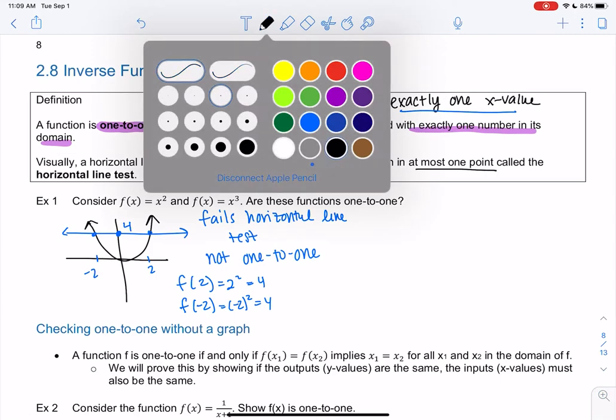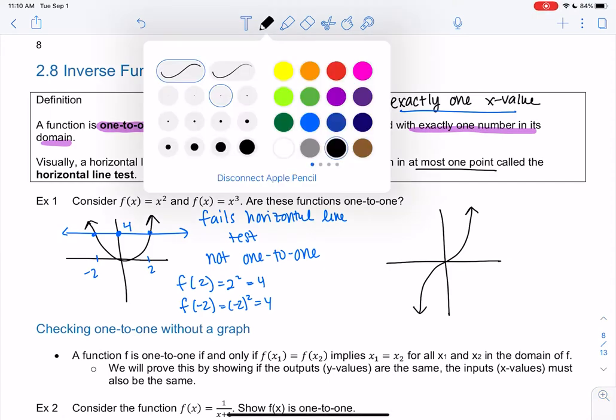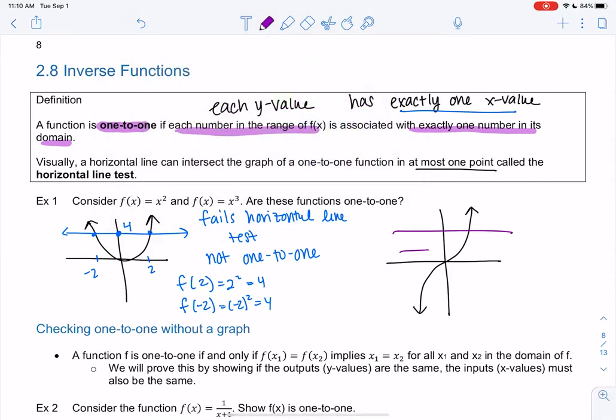Let's check out x cubed. We've seen the graph before. If I draw horizontal lines, does it ever cross more than once? Nope, so this one would pass the horizontal line test, so this one would be one-to-one. And so one-to-one will have some special features in a little bit, but we're just going to practice identifying one-to-one.